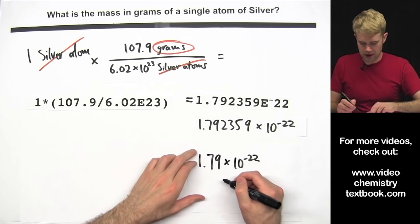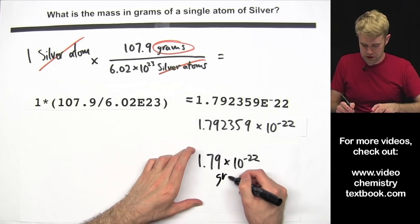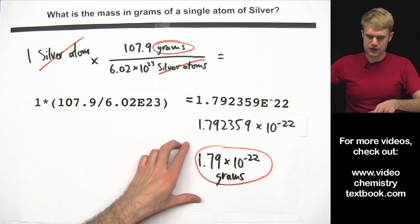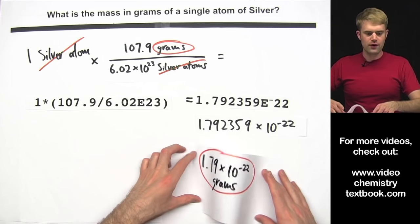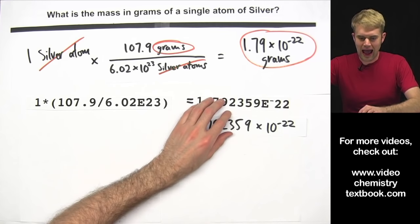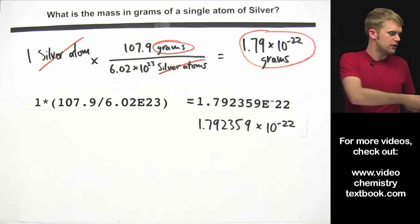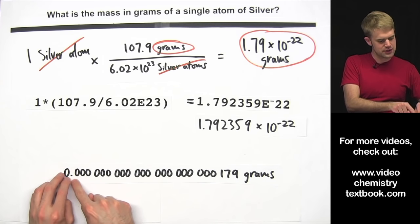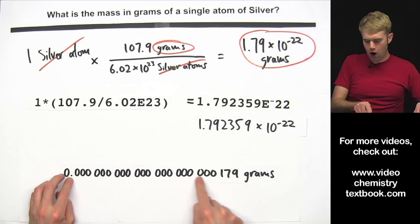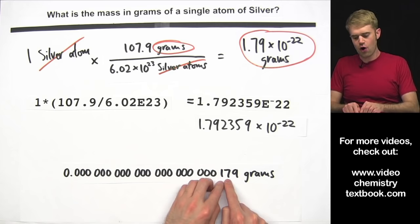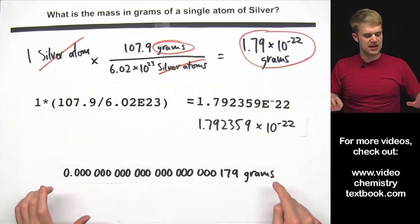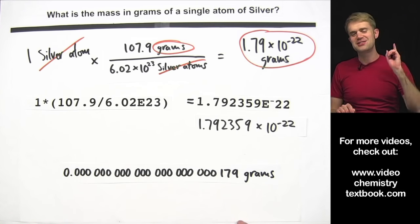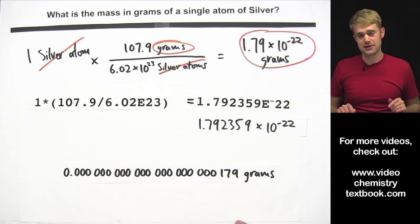The units are grams, and that is our final answer for the mass of a single atom of silver: 1.79 times 10 to the negative 22nd grams. Just to show you this not in exponential notation — here is a decimal point, and all the way over here, 179. This is a tiny, tiny, tiny number. It is how much a single atom of silver weighs.